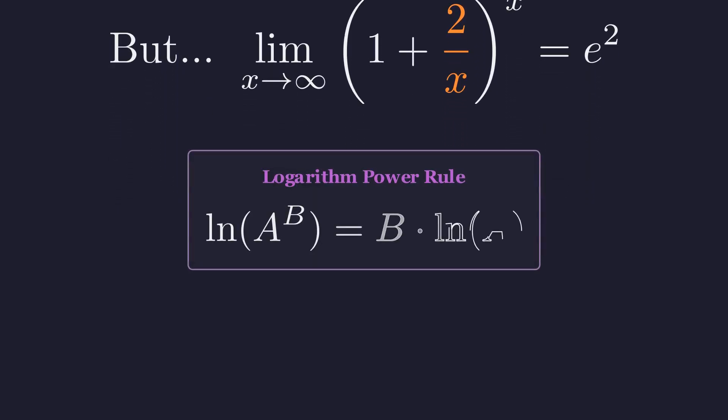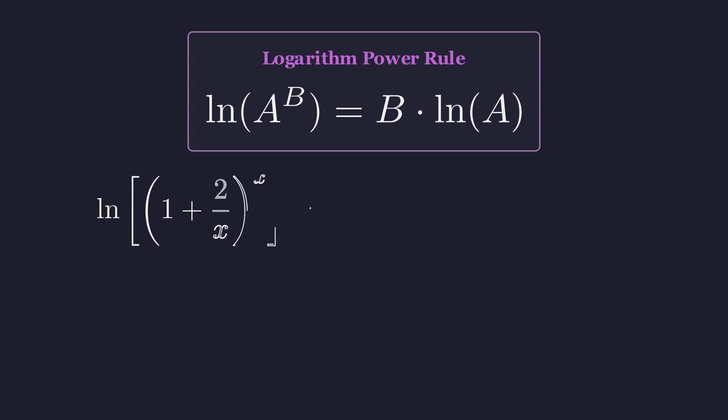Before we continue, let me introduce a key tool. The power rule for logarithms lets us bring an exponent down as a multiplier. This simple rule is incredibly powerful for analyzing limits like these. Using that logarithm power rule, the exponent comes down, we simplify, and we get 2, which means the original limit equals e to the power of 2. That's e squared. Just by changing 1 to 2 in the numerator, we jumped from e to e squared.